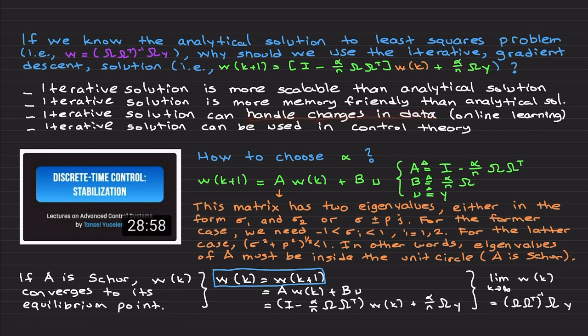The last two items are more important for my daily research. Third, the iterative solution can handle changes in the data — if you are doing prediction and the data changes, running least squares via gradient descent iteratively allows you to accommodate new data and make more accurate long-term predictions. Fourth, the iterative solution has many applications to control theory — I've used it for constraint enforcement, online path planning, and many other areas. At some point I also want to cover the continuous-time version.